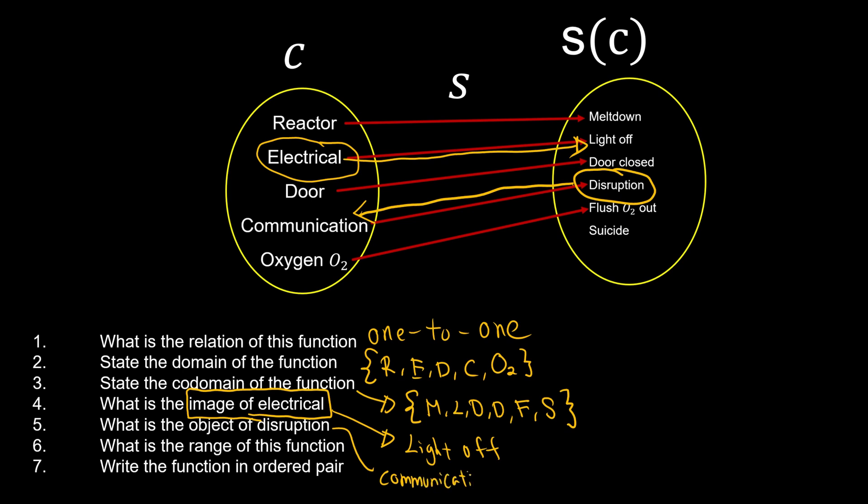So what is the range for this one? So the range is going to be the result of whoever that is eventually happened, whoever that is already paired up. So suicide is not in the range. So we have meltdown, light off, door, disruption, and flush.